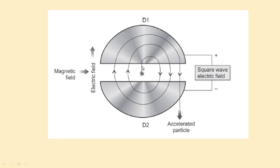First it got an acceleration, then with constant speed it moves in a semicircular path. Here it gets accelerated again. When the positive charge reaches the gap, the polarities are changed — D2 becomes negative and D1 positive — so it is accelerated again, completing another circle. In each circle, the speed is increasing. From the equation for the motion of a charged particle in a magnetic field, when velocity increases, the radius of the semicircular path also increases.